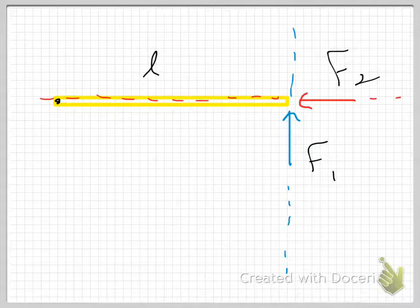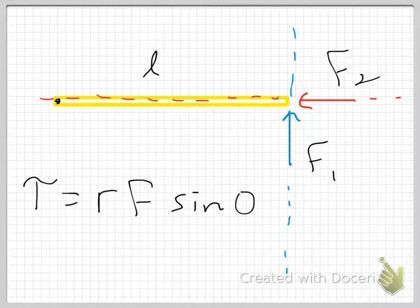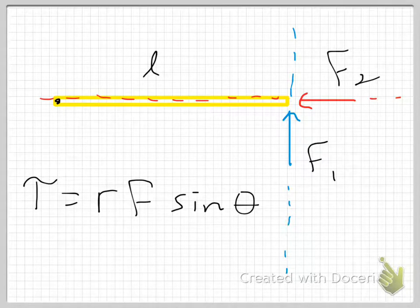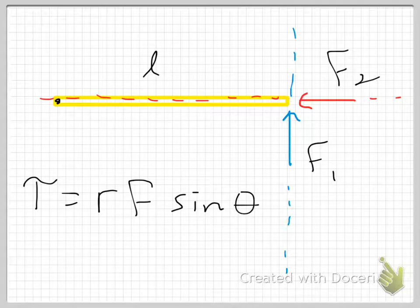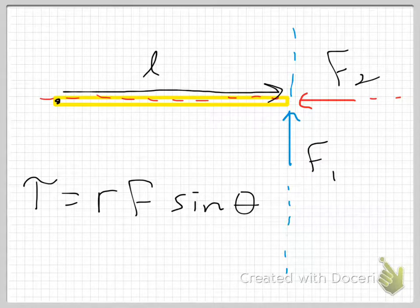Let me write down the definition of torque: torque equals R times F times sine of theta, where R is the distance from the point of application of the force to the point of rotation, and F is the magnitude of the force. The sine theta term can be a little problematic — it is the angle between the R vector and the force vector. The R vector extends from the point of rotation to the point of application of the force; in our case its length is L.